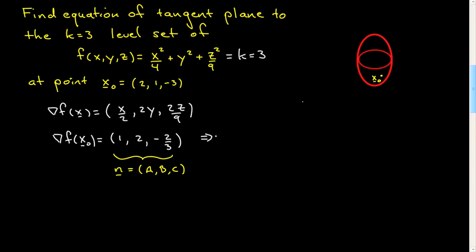Now we can write our equation for the plane. It'll be simply this vector dotted into x minus x naught. I'm going to write it out in coordinates. That'll be x minus 2, y minus 1, and z minus minus 3, equal to 0. We just multiply through. That'll give us (x-2) plus 2(y-1) minus 2/3(z+3) equal to 0.